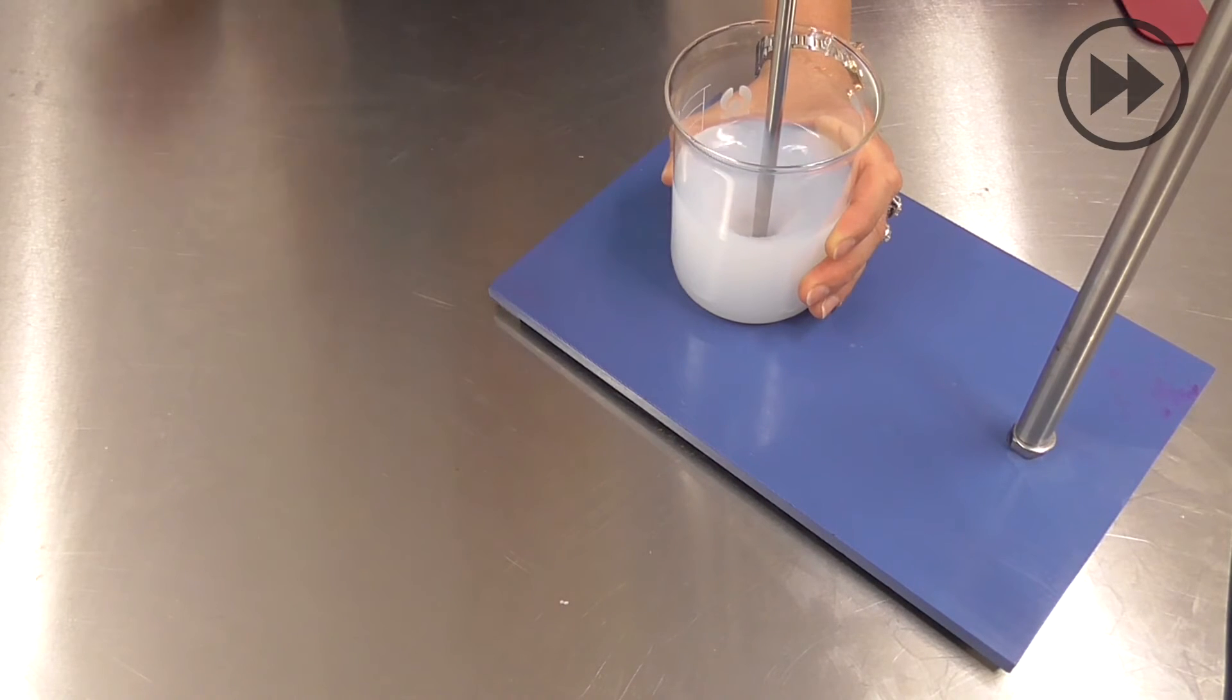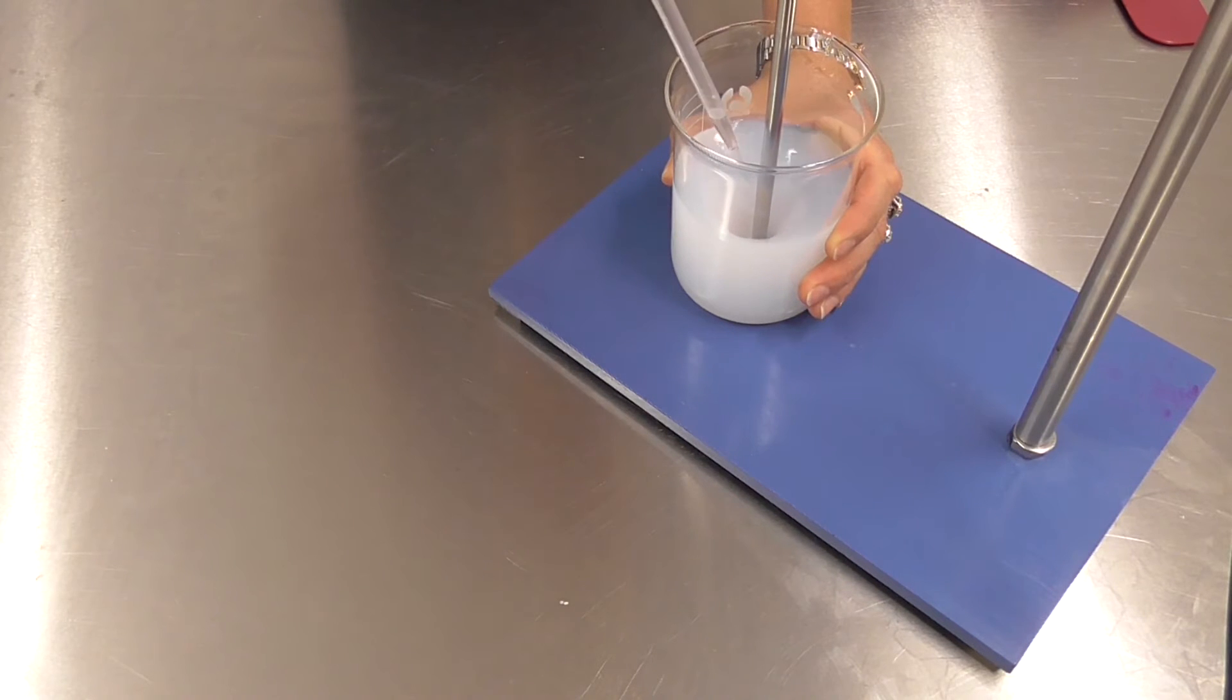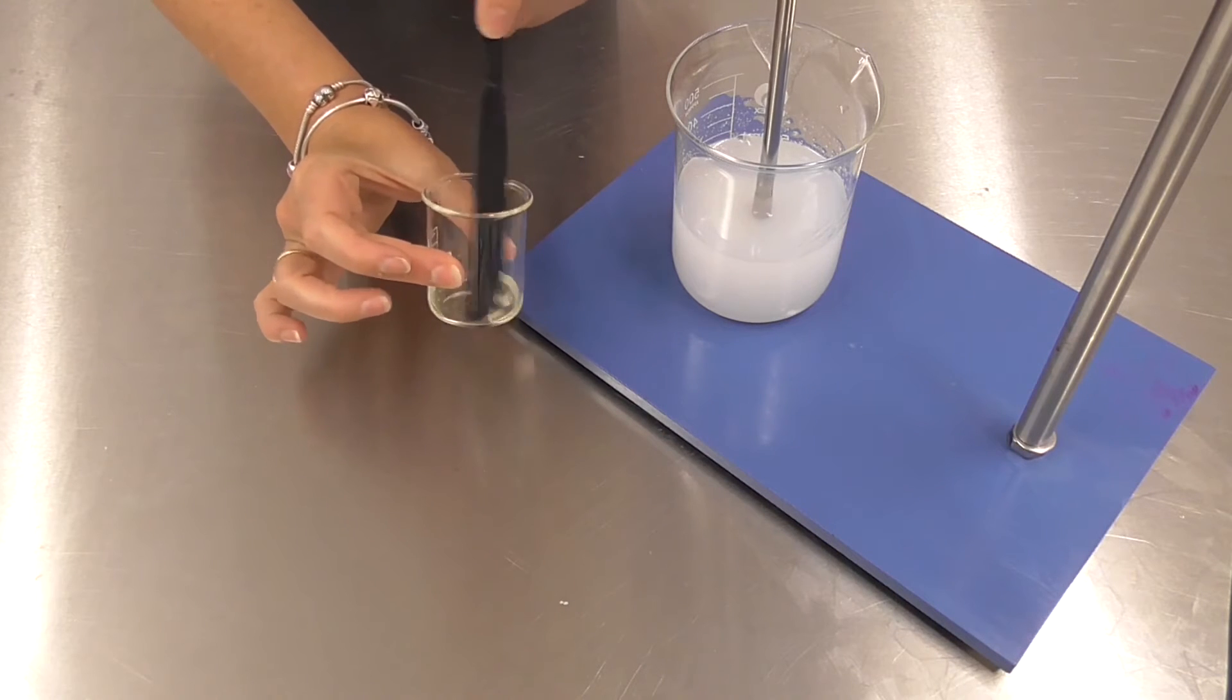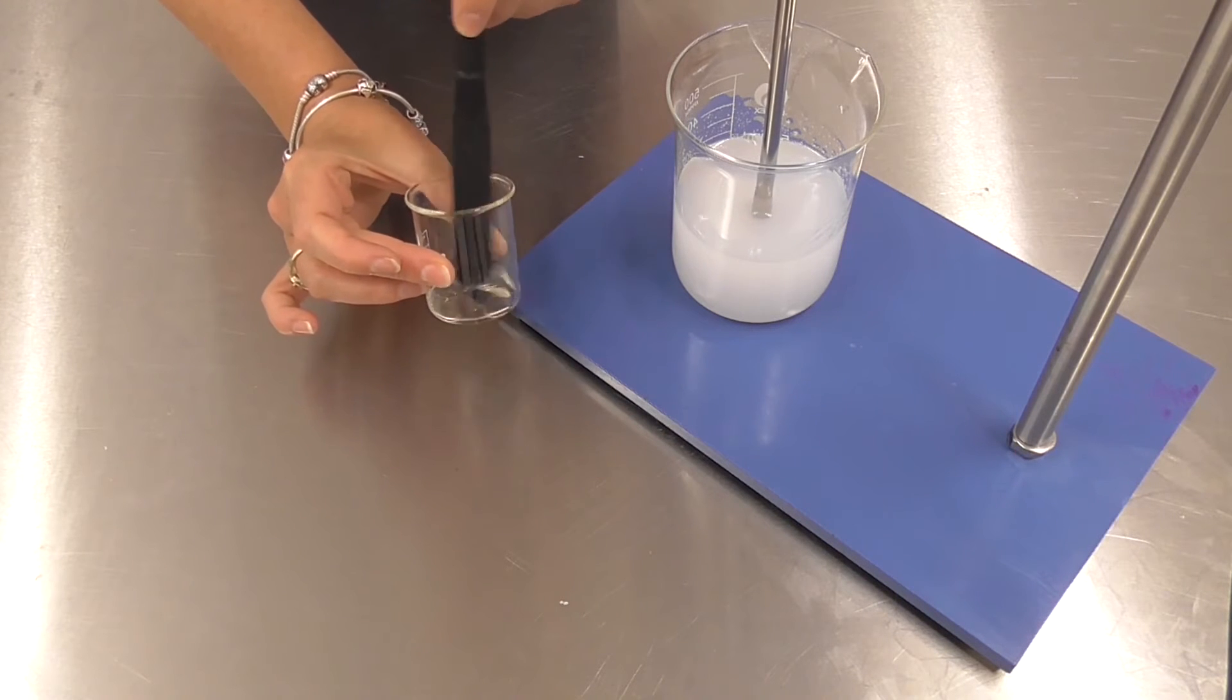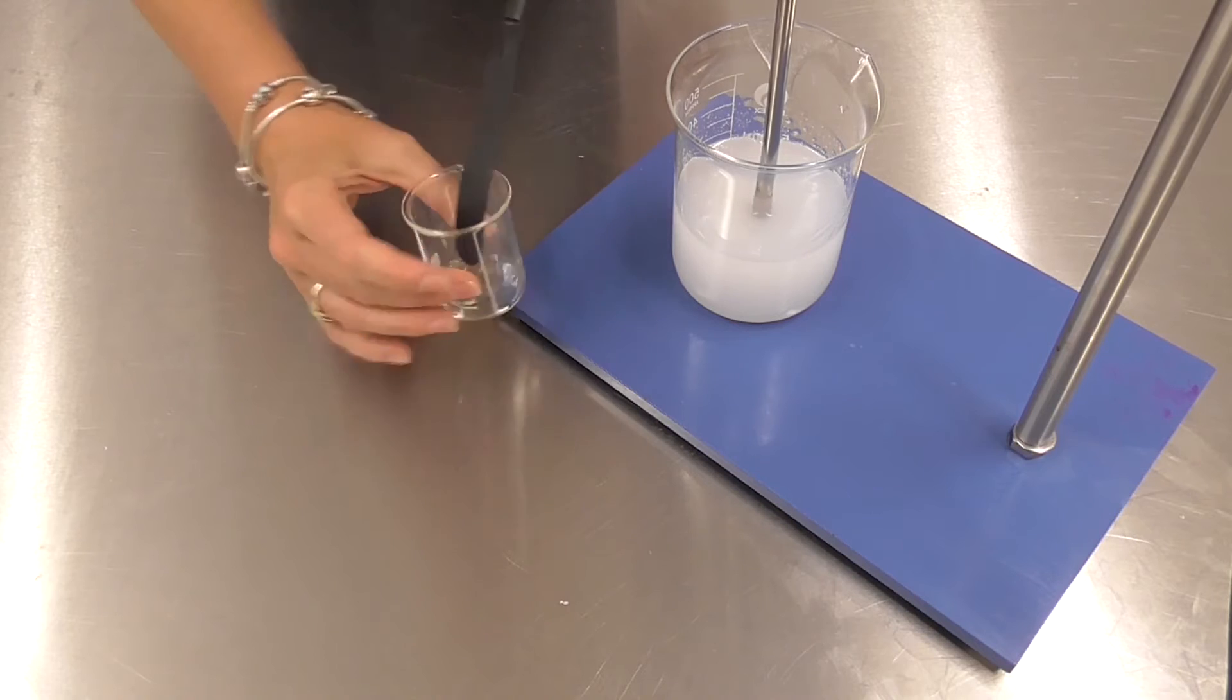Once we have dispersed our polymers adequately we can then neutralize them. You'll see this is when they start to go clear. We can then add our solubilized fragrance and our preservative is also present here.